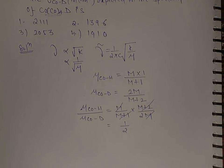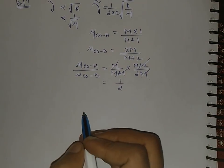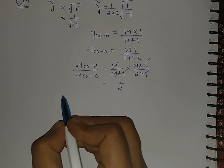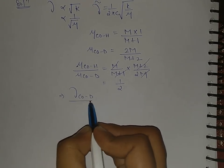So I have cancelled this value and this M goes by this M, so we are left with how much? 1 over 2.